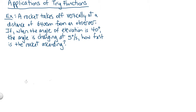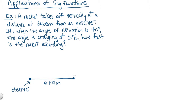Let's see if we can draw a diagram to organize some of the information in the problem. So we've got an observer right here. The rocket is taking off vertically at a distance of 6,400 meters from the observer. So here's the ground, 6,400 meters away is the place that the rocket was launched from, and the rocket is traveling vertically. There's the rocket's path.